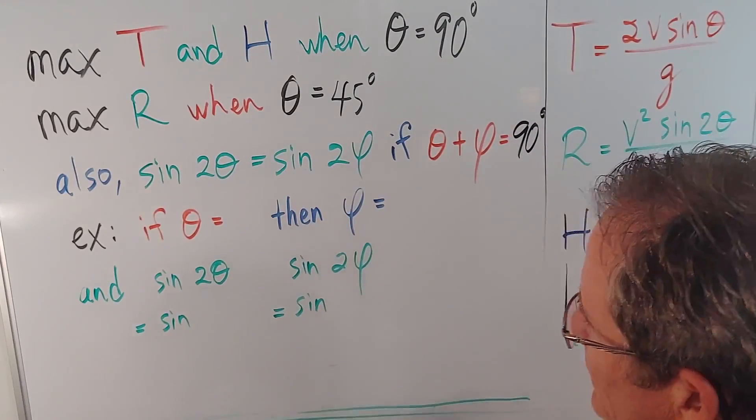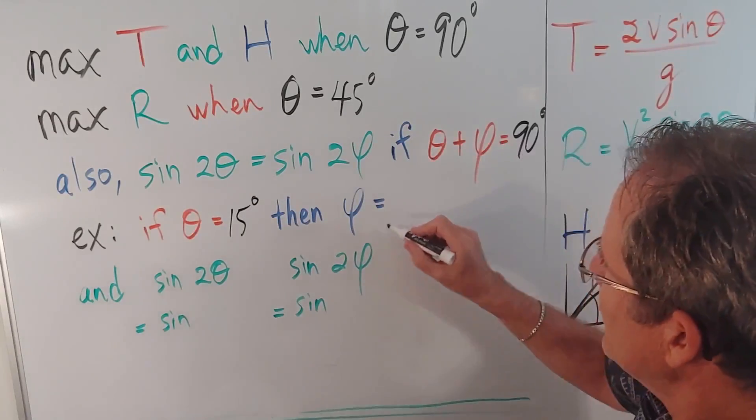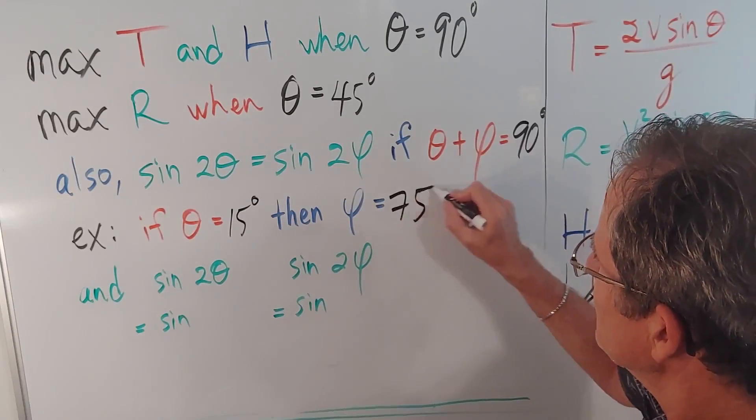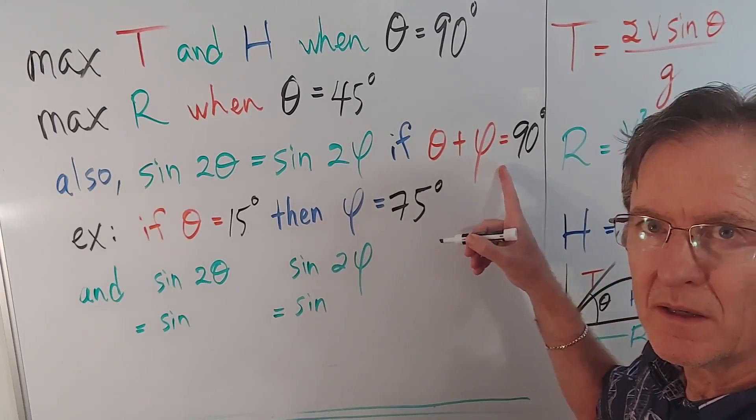So, for example, if theta is, let's say, 15 degrees, then phi would be 75 degrees because of this identity here.